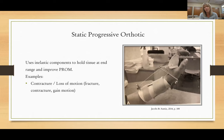The static progressive orthotic is similar to the dynamic splint, but the difference is there are no elastic components. The string you see holding that splint back is a static string like fishing line that does not stretch. You can use that for contractures, loss of motion, fractures, or to gain motion.